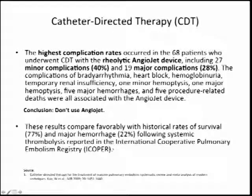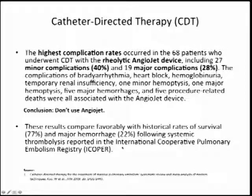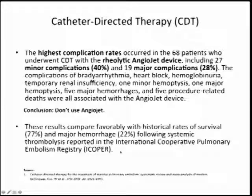Dr. Kuo's Stanford meta-analysis of nearly 600 patients in 35 studies showed an excellent clinical success rate, but also significant minor and major procedural complications — a major complication rate of 2.4%, comparable to PEITHO's approximately 2–2.5% hemorrhage rate. One patient had intracranial hemorrhage. The paper claims results are comparable to historical survival rates, but those comparisons use ICOPRA data from 1999 — subsequent EMPEROR and RIETE registries show much better outcomes, so that comparison may be flawed.